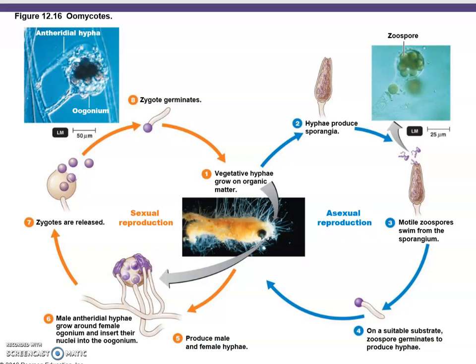The Oomycota life cycle follows the typical pattern: asexual reproduction involves simple division by mitosis, while sexual reproduction involves gametes and then zygotes. No further detail is necessary here.